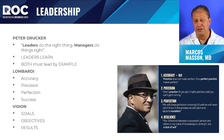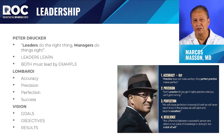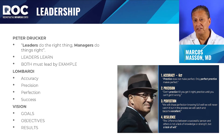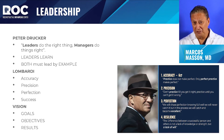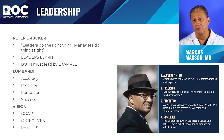On perfection, Lombardi told his team in 1958, when they were in last place: 'Gentlemen, we will chase perfection knowing we will never reach it, but in the process we will become excellent.' Even if perfection is unachievable, strive for it and you'll become excellent. On resilience, Lombardi said the difference between someone who succeeds and someone who does not is not who is smarter or stronger, but the person with the biggest will or desire to win — resilience. Never give up.